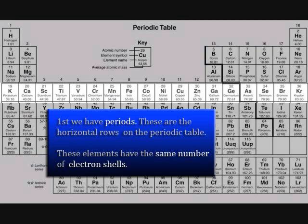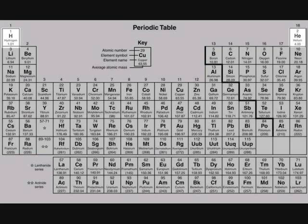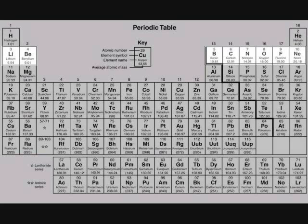Periods, which are the horizontal rows, indicate how many electron shells each row has. This means that every element in a period has the same number of electron shells. This means that elements in the fourth period have four electron shells. Hydrogen and helium are located in period 1 and have one electron shell. As we move into the next period, period 2, these elements have two electron shells.